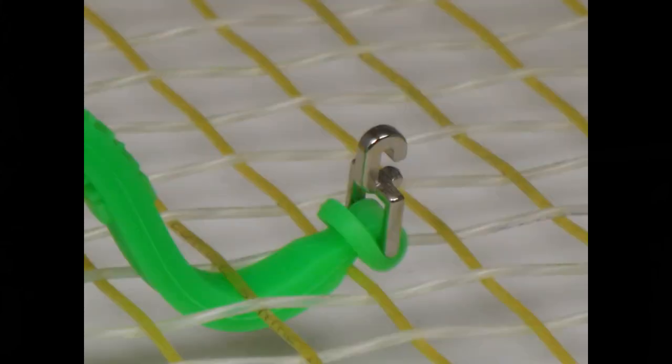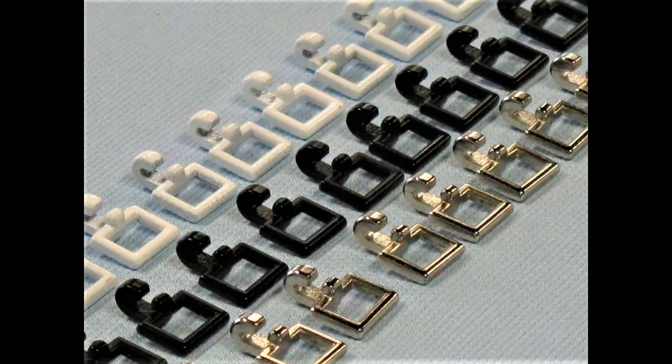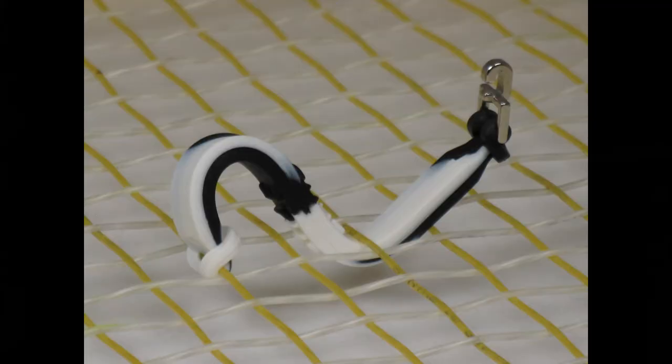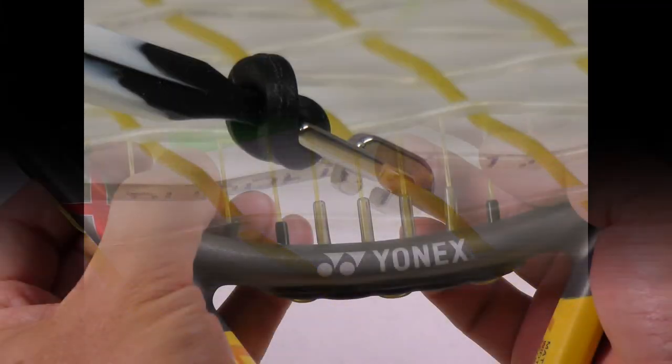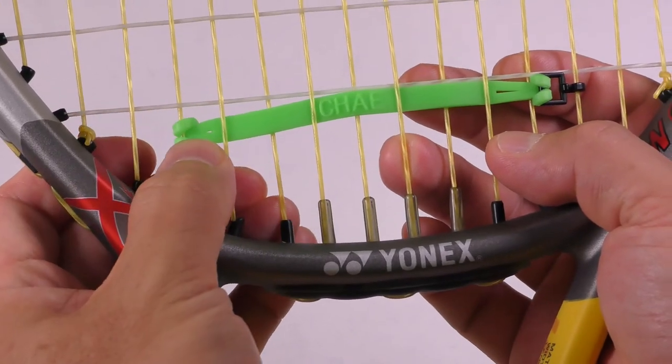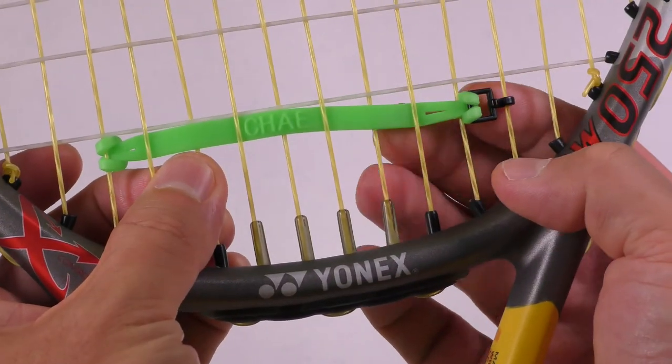VIX utilizes a loop and a single clip design, making it the strongest way to naturally adhere to strings. It prevents movement, promotes strength, and mostly it promotes durability.